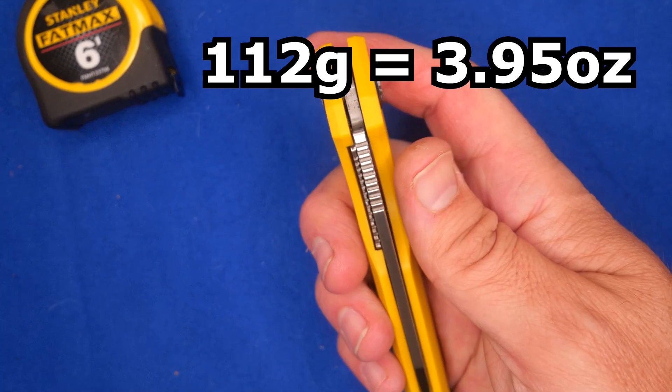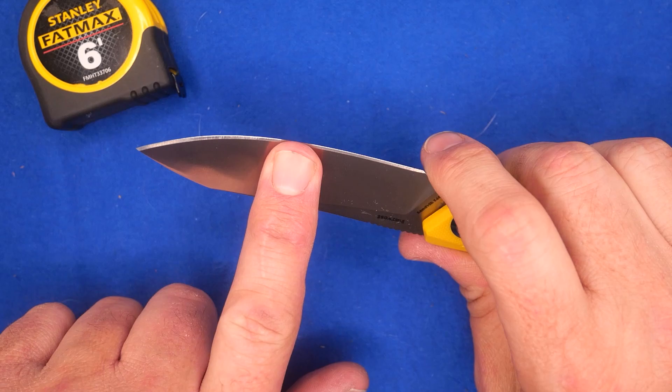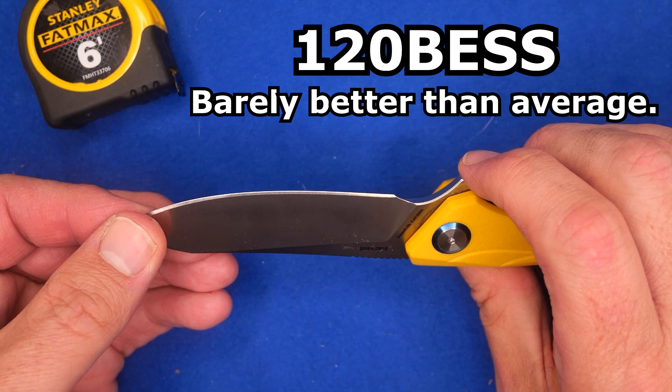The factory sharpness, 120 BESS, just ever so slightly better than average. The cutting edge length is 84.7 millimeters, 3.333 inches.